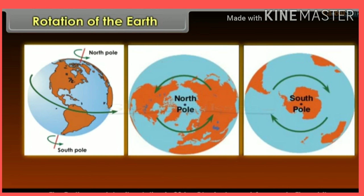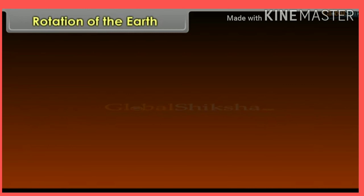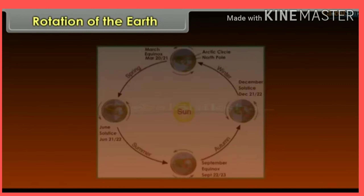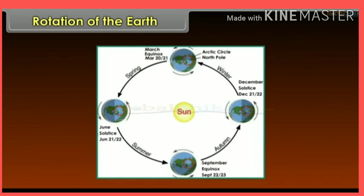The earth completes its rotation in 23 hours, 56 minutes, and 4 seconds. The orbit of the earth is elliptical. The seasonal changes occur due to the inclination of the earth's axis.